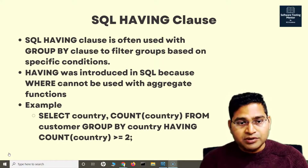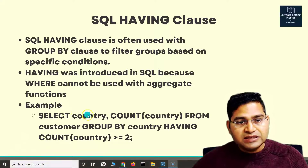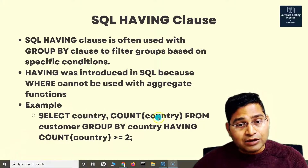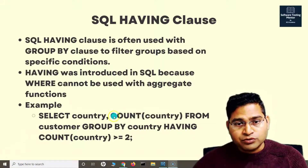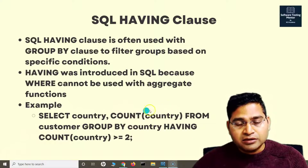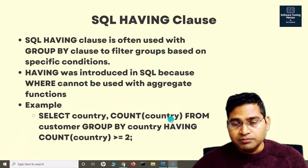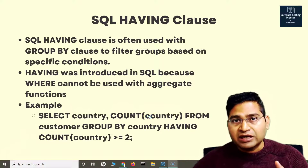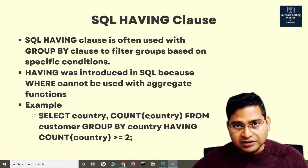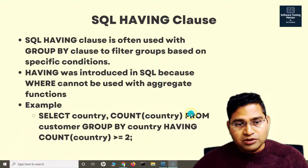For example, here is the query. So I'm selecting the country column and then counting how many occurrences there are for a particular country. COUNT is the aggregate function, and I'm counting the country column to get the actual count of occurrences from the customer table.